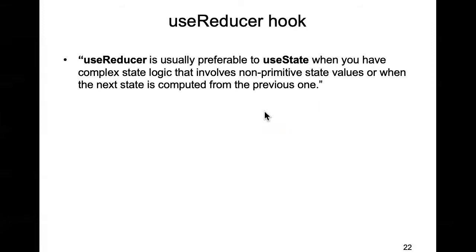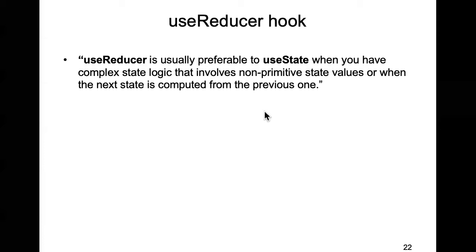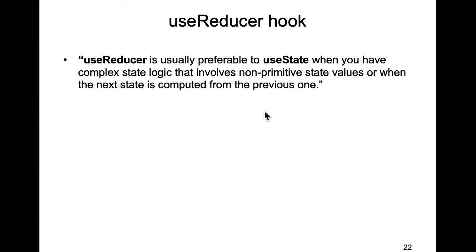The useReducer hook is really just an alternative to the useState hook — it's also about managing state within a component. When would you use useReducer as opposed to useState? Well, if the makeup of your state is something non-trivial — like up to now our state variables have been maybe a string, or a Boolean, all fairly straightforward — we had one which was an array, but we never actually did anything to the array in terms of changing its state.